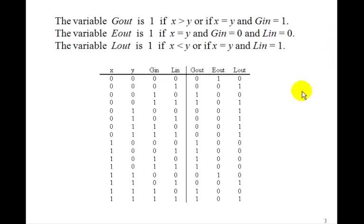Now we can make this truth table. Remember g out is going to be 1 if x is greater than y. Well, here's that x is 1 and y is 0 here, so we've got four 1's here.